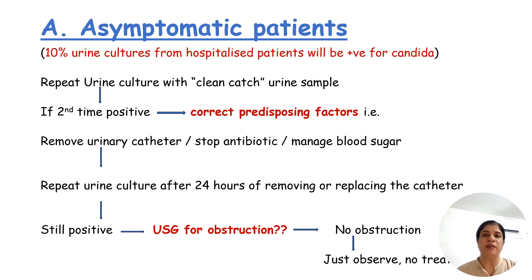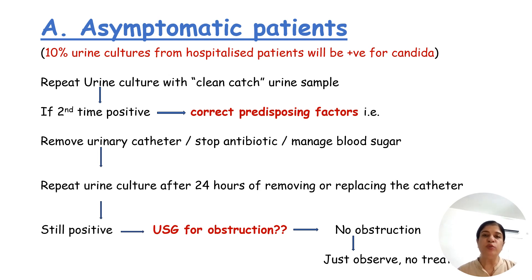If the catheter cannot be removed, replace it. After replacing the catheter, wait 24 hours and then collect the next sample. If that sample is also positive, do an ultrasound to look for any fungal ball or obstruction. If none is present, this kind of temporary colonization usually resolves spontaneously without any treatment, so the patient should be observed and no treatment given.